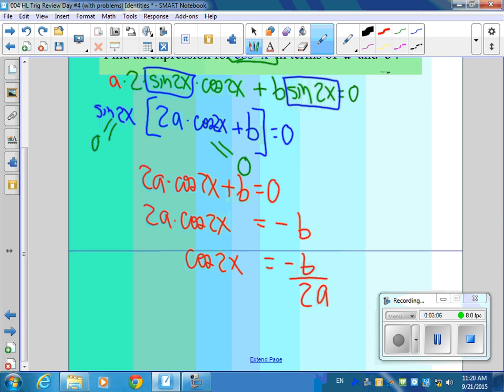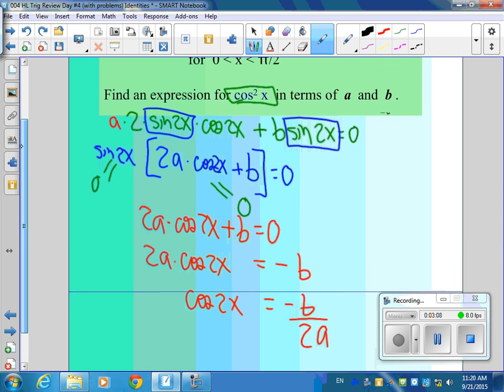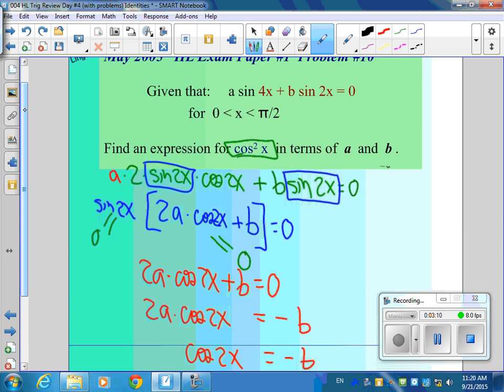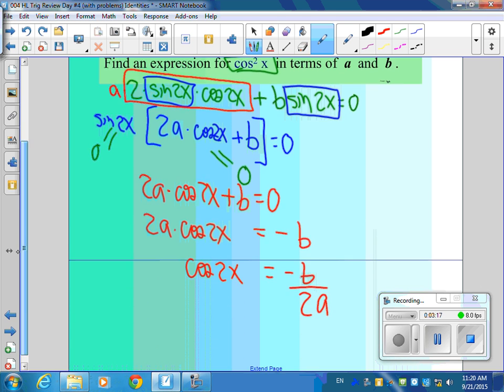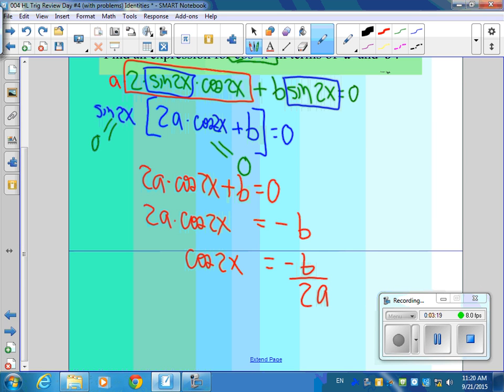So the big moves we've made so far is we changed sine 4x into this. That was a big move. And then the law of zeros is if I had x times y equals 0, I could say x is 0 or y is 0. Because if one's 0, it doesn't matter what the other thing is. So that's why this is so helpful to set that equal to 0.